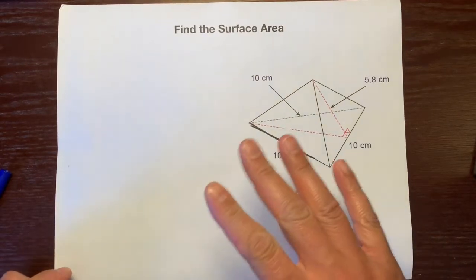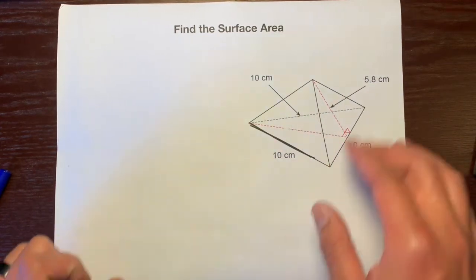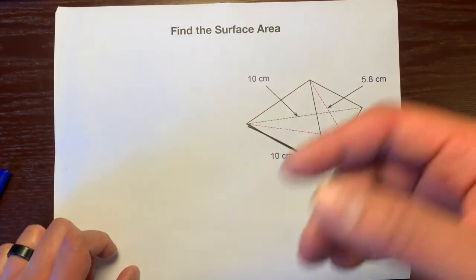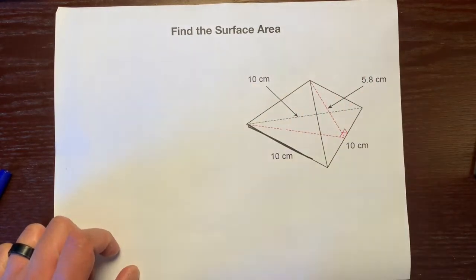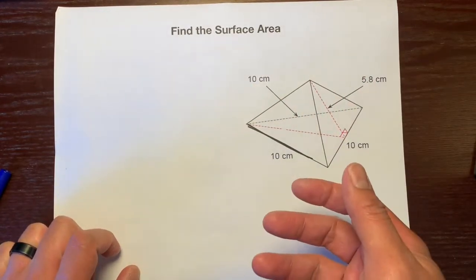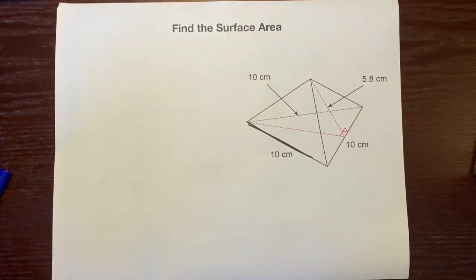First off, I know this is a little tricky just based off the diagram right here. This is a three-dimensional solid that's drawn on a two-dimensional piece of paper. So the first thing is let's determine what kind of solid this is.